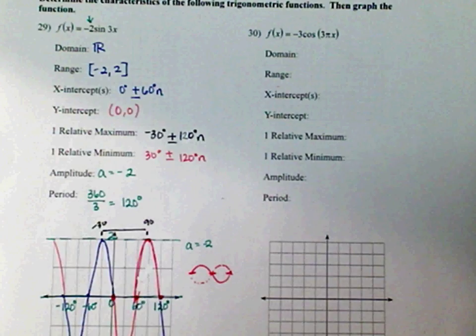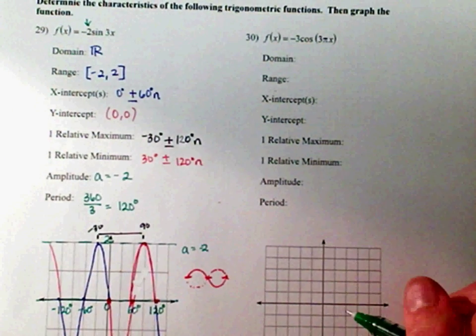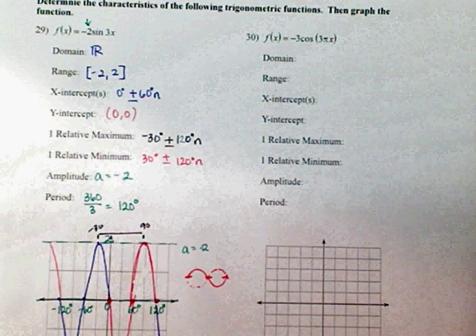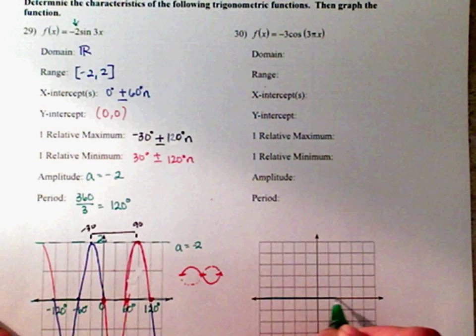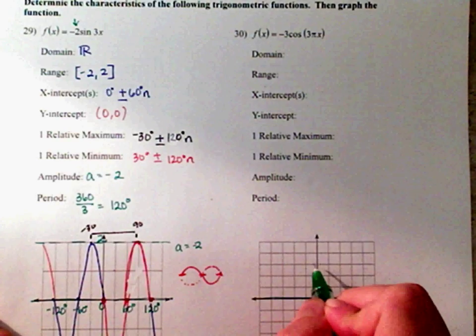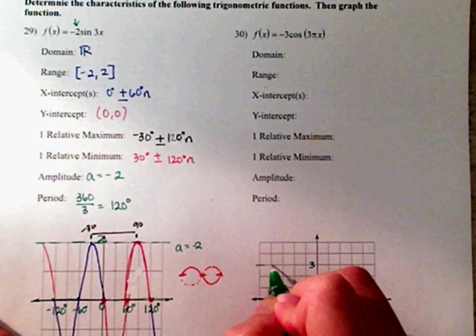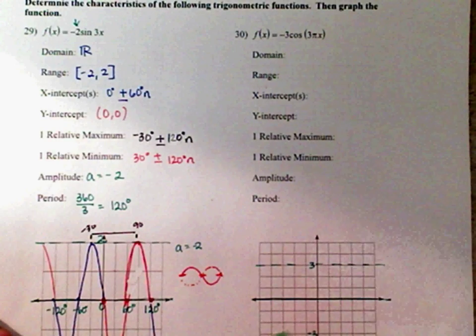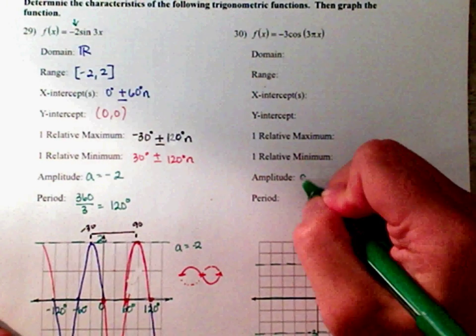Number 30. Here we go. This time, we have a pi. So, we might want a pi in our solution here. Here we go. No change. Amplitude is 3. One, two, three. One, two, negative three. All your dashes to separate your boundaries. Maximum and minimum. So, amplitude is a 3.